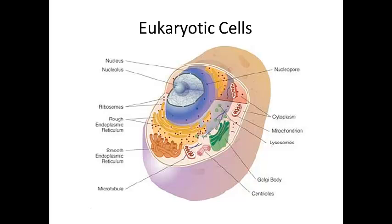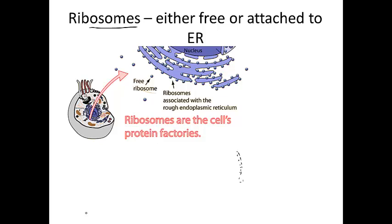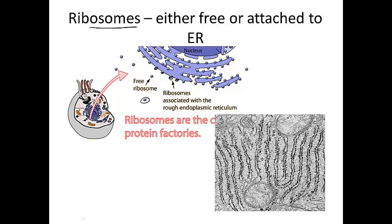Eukaryotic cells, which you're probably a bit more familiar with — let's look at each of these organelles in a little more detail. Ribosomes are also found in prokaryotes, but in eukaryotes you might find ribosomes attached to the endoplasmic reticulum, in which case it would be called rough ER. You might also find ribosomes floating freely in the cytoplasm. Here's an electron micrograph — all these little black dots are ribosomes attached to ER.